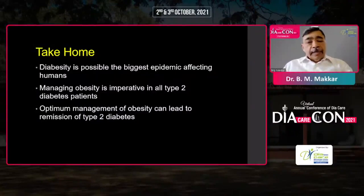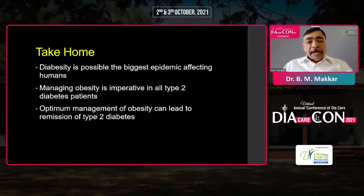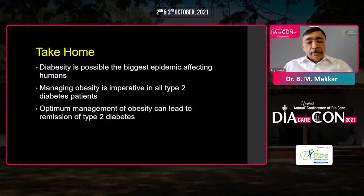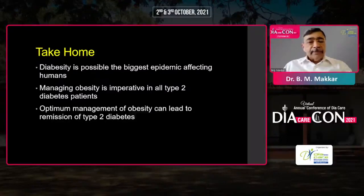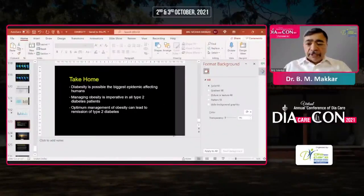To end this presentation, the take-home is that diabesity is possibly the biggest epidemic affecting humans in the current century. Managing obesity is imperative in all type 2 diabetes patients — it is not the management of hyperglycemia which should take priority, but the management of obesity. We have enough data now that optimum management of obesity can lead to even remission of type 2 diabetes, or if not remission, significant improvement in hyperglycemia as well as cardiovascular risk. The perspective of management needs to change as far as diabetes management is concerned. Thank you very much.